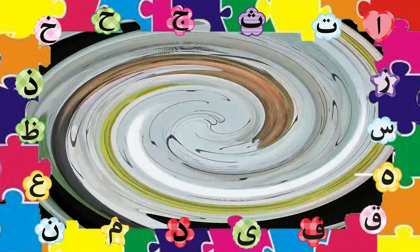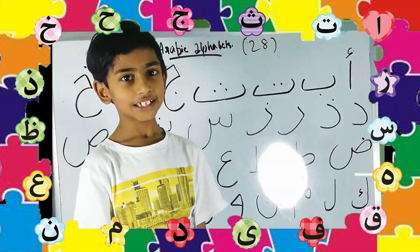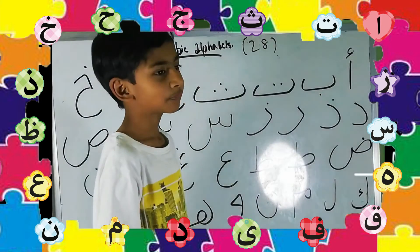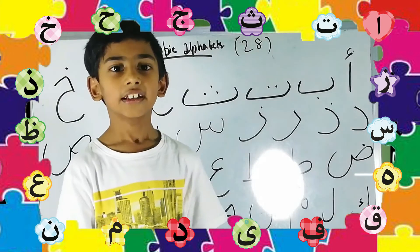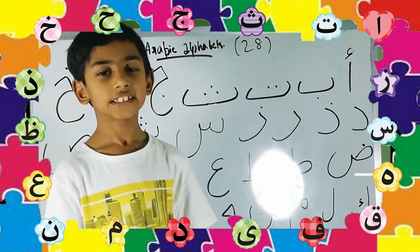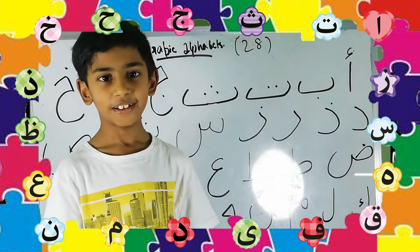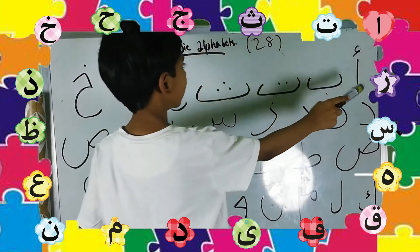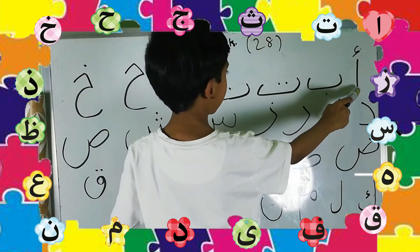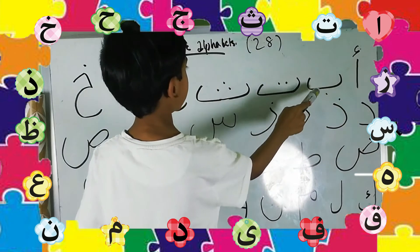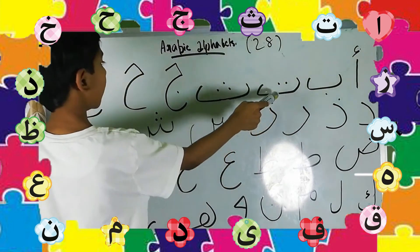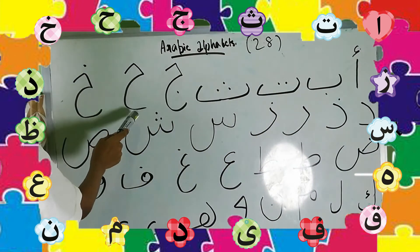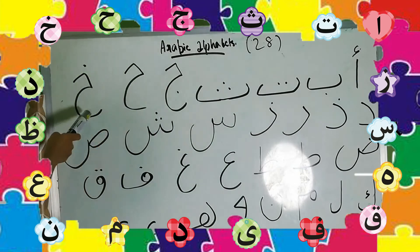For this week we will be starting the introduction of the Arabic alphabet. In total there are 28 letters in the Arabic language. Let's go over them: alif, ba, ta, tha, jim, ha, kha...